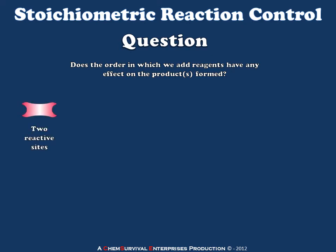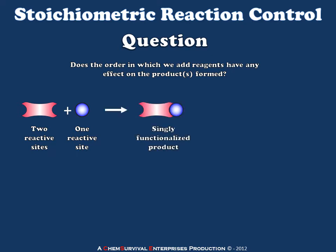Let's start by thinking about a compound which has two equally reactive sites on it. We'll also have another compound with a single reactive site that will react with our first reagent. These two molecules can react with one another to form a new product, which has been functionalized once by the addition of our blue reagent to our pink reagent. But there's an additional reactive site on this intermediate.